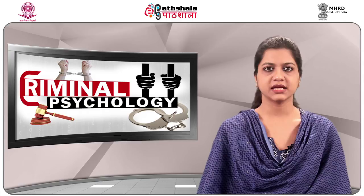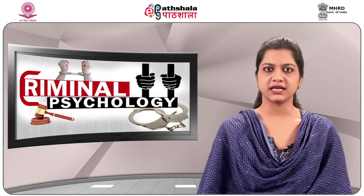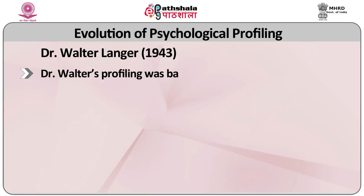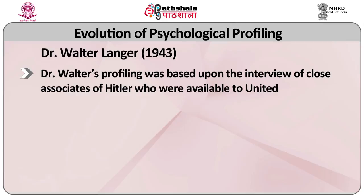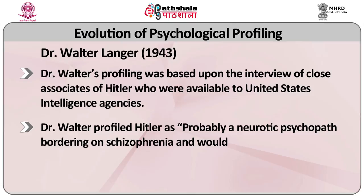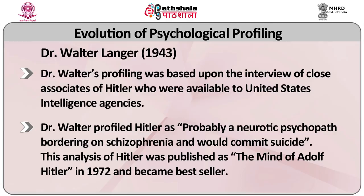Various psychological theories are linked in to understand the criminal and the criminal act. In the early 1800s, profiling was done by the medical fraternity. Dr. George Phillips and Dr. Thomas Bond, two physicians, did the profiling of Jack the Ripper, who had raped and murdered prostitutes near Whitechapel. Dr. Walter Langer, a psychiatrist, during World War Two, did a psychological study on Adolf Hitler for the Office of Strategic Services. His profiling was based on interviews of close associates of Hitler available to United States intelligence agencies. Dr. Walter profiled Hitler as probably a neurotic psychopath bordering on schizophrenia who would commit suicide. This analysis was published as 'The Mind of Adolf Hitler' in 1972 and became a bestseller.